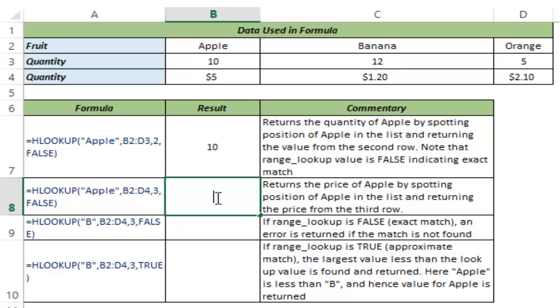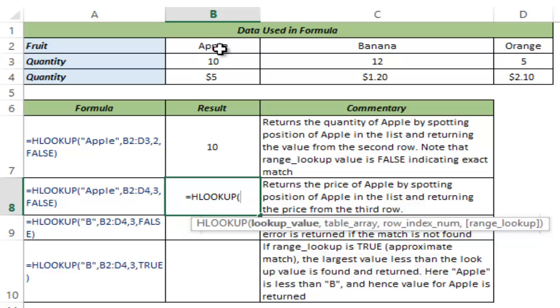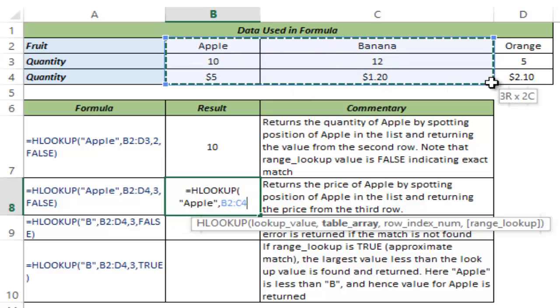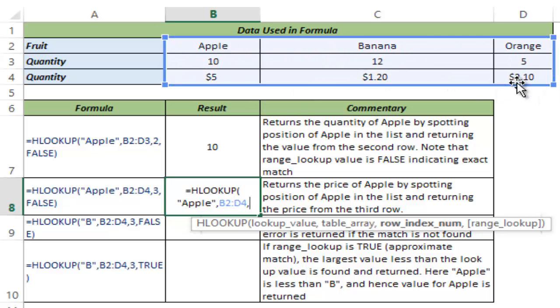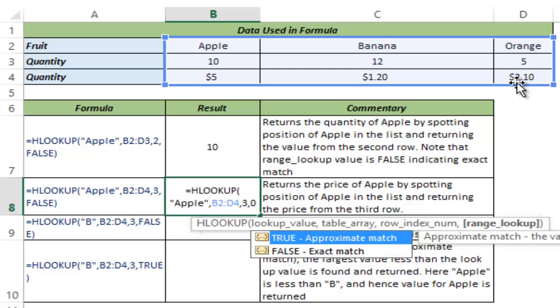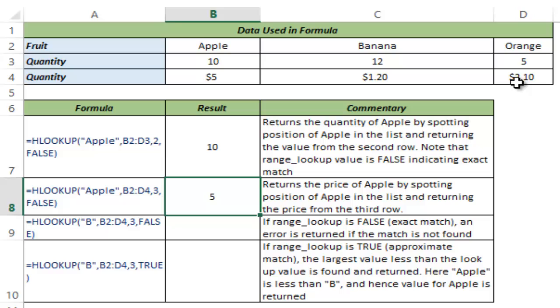Now let me show you what if I change the row number. I use lookup value as apple, table array is this B2 to D4, row index number is 3 this time and instead of false I can also type 0 and I hit control enter and you can see it returns 5 which is in the third row.